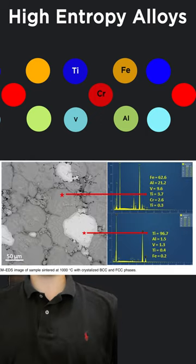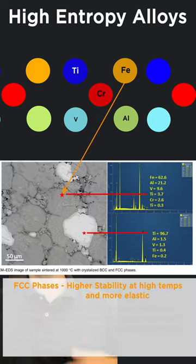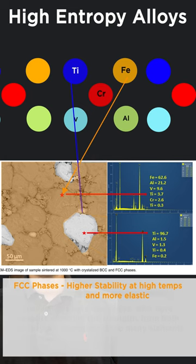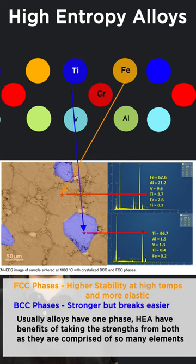How does this work? The high entropy alloy has iron-rich FCC phases and titanium-rich BCC phases, strong metallurgical bonding, and high thermodynamic stability.